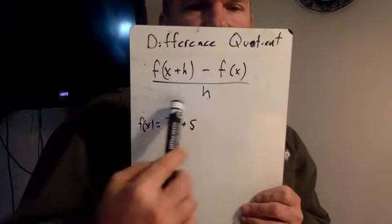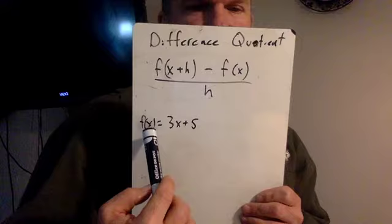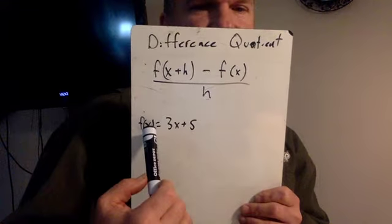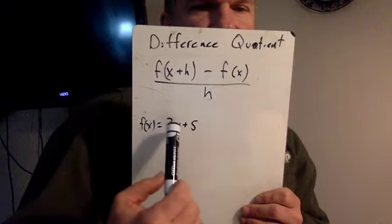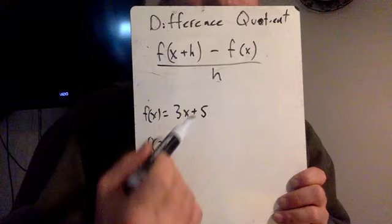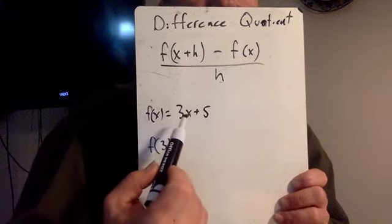I'm going to give you a little review on what f of x means. f of x means whatever you put after f in this parenthesis, that's what goes in for x. So for example, if I put a 3 in there in the parenthesis, then I'm going to put a 3 in for this x. So I'm going to have 3 times x, and x is now 3. So 3 times 3. Too many 3s.